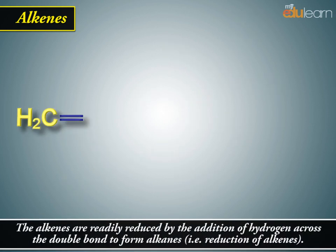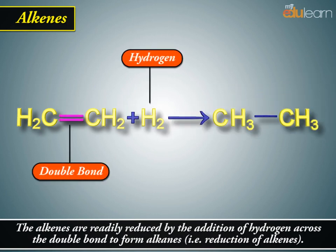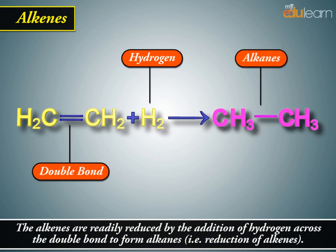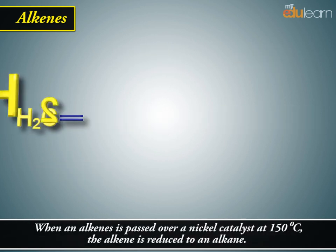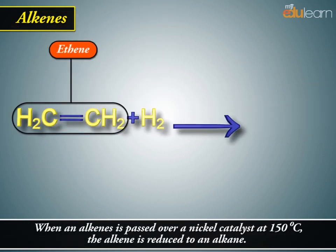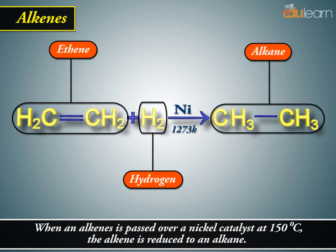Alkenes are readily reduced by the addition of hydrogen across the double bond to form alkanes, i.e., reduction of alkenes. For example, when an alkene is passed over a nickel catalyst at 150 degrees Celsius, the alkene is reduced to an alkane.